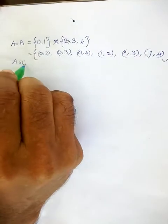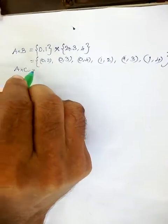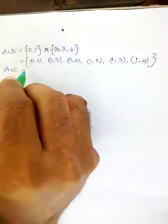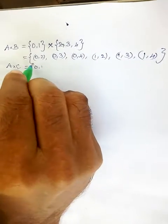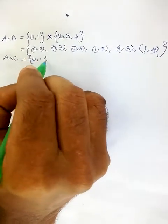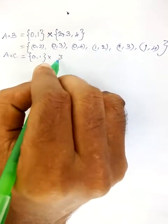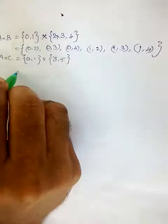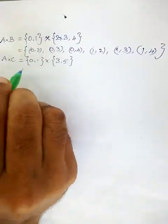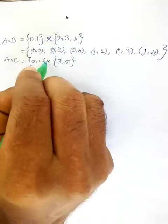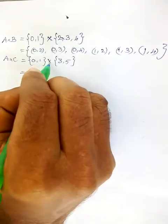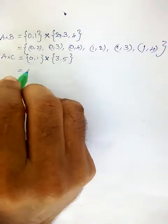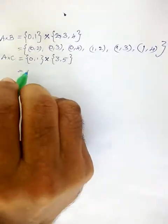Similarly, we have to find A cross C. C is the set {3, 5}. It is a cross product, so we have to write the elements as ordered pairs, pairing each element of A with each element of C.